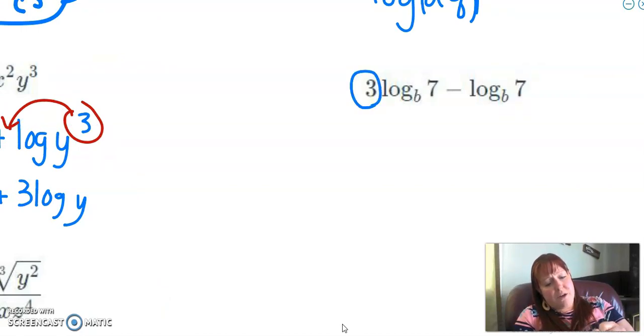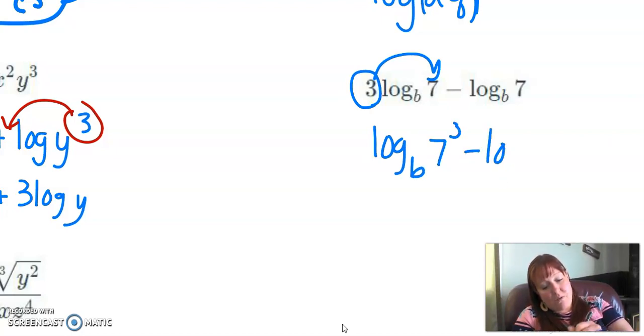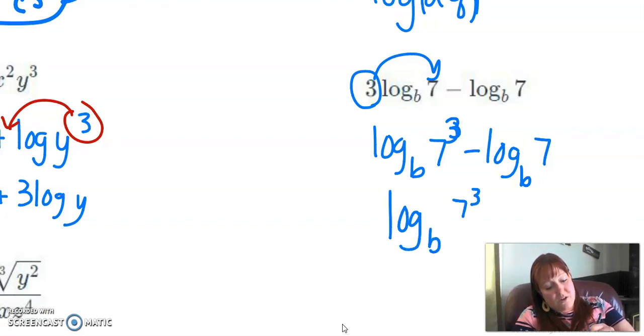All right, this one, again, we're going to condense it. So we're going to bring this three up front, or not up front, out of the front, up onto the seven. So we have log base b of seven to the third minus log base b. I'm getting ahead of myself. Log base b of seven. And since we're subtracting, I know this is going to be dividing. So I go log base b of seven cubed over seven.